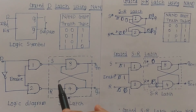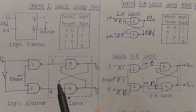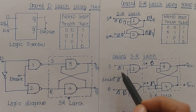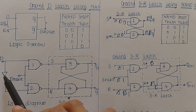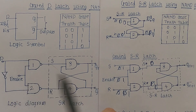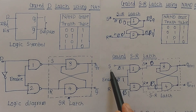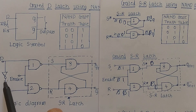If we compare the logic diagrams of the gated D latch and the gated SR latch, we find that both diagrams are the same. The only difference is that in the gated D latch there is only a single input D, whereas in the gated SR latch there are two inputs S and R. One additional NOT gate is added in the gated D latch which is not present in the gated SR latch.